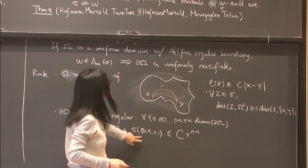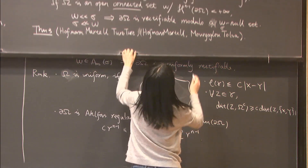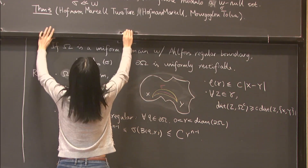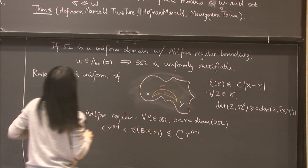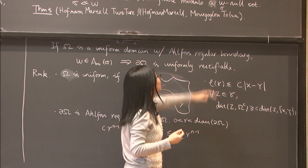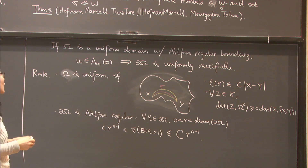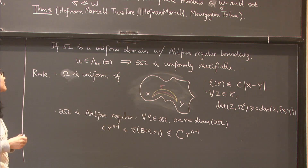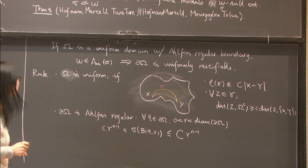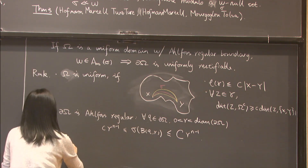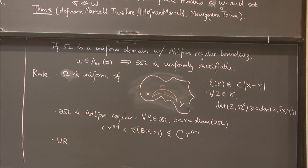Ahlfors regularity quantifies the fact that the boundary is (n−1)-dimensional. The A∞ condition is a quantitative form of mutual absolute continuity. Uniform rectifiability means the boundary is contained in a countable union of submanifolds with uniform control on the submanifolds. Now let's move on to the case of elliptic measure.